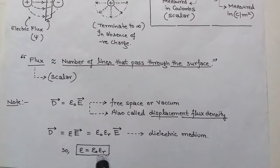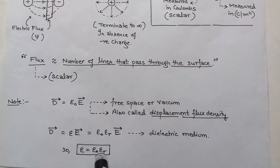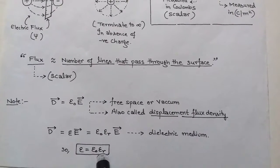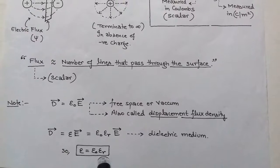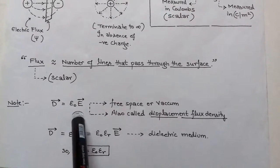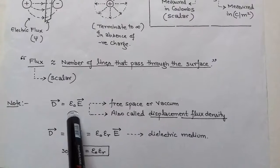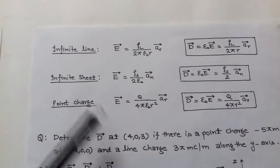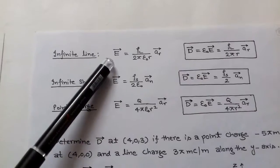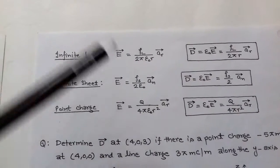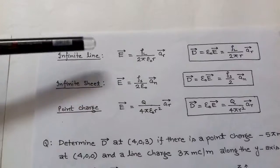This formula becomes D = ε₀εᵣE for electric flux density. In case of free space, relative permittivity εᵣ equals 1. As we know, the electric field intensity due to an infinite line equals ρl upon 2πε₀R in the direction of R.